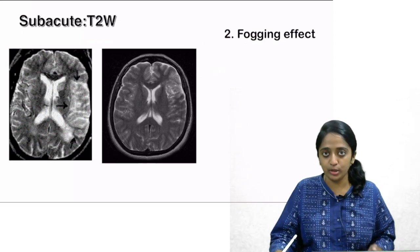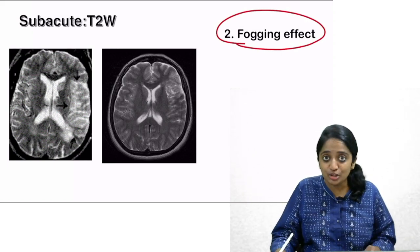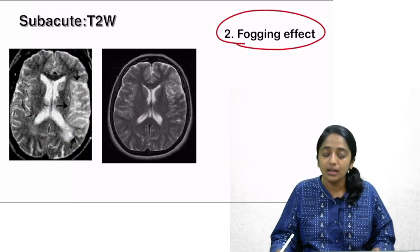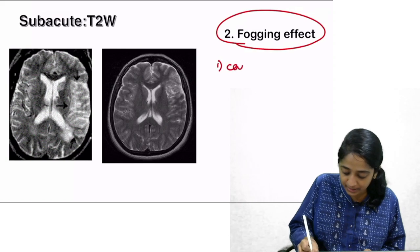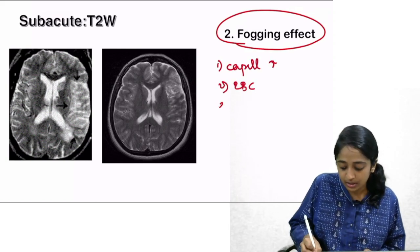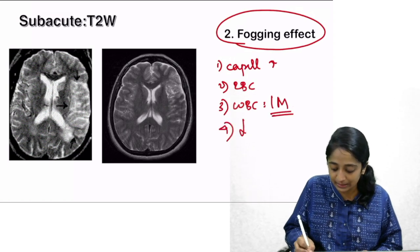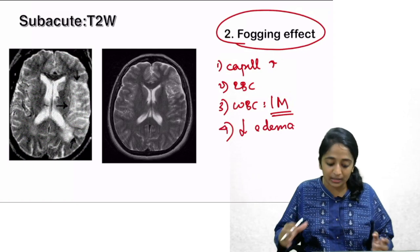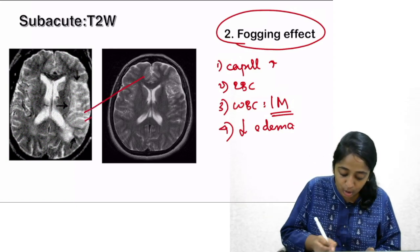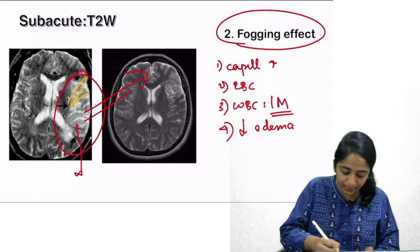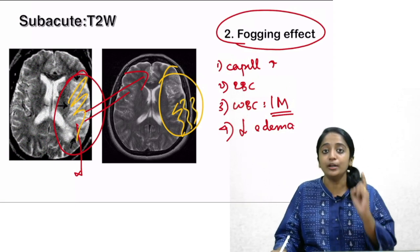Another feature of subacute infarct is the fogging effect, which we also discussed in CT imaging. In the subacute stage, the brain tries to contain the damage by proliferation of capillaries. RBCs and macrophages (lipid-laden) come out, and more importantly, edema decreases. Together, these factors decrease signal intensity, so the T2 signal comes down and the brain looks apparently normal. Initially it was bright, but now there is no significant abnormality apparent on MRI — that is the fogging effect.